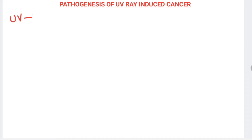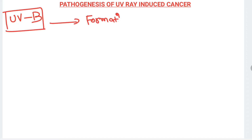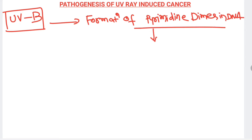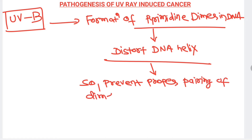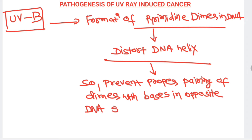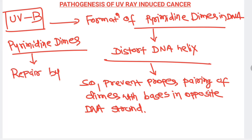The pathogenesis of UV-ray-induced cancer: UV light type B exposure leads to formation of pyrimidine dimers in the DNA. These pyrimidine dimers distort the DNA helix structure, preventing proper pairing of the dimer with bases on the opposite DNA strand. This damages the DNA, and mutant DNA can proliferate, leading to cancer. Normally, pyrimidine dimers are repaired by the nucleotide excision repair pathway.